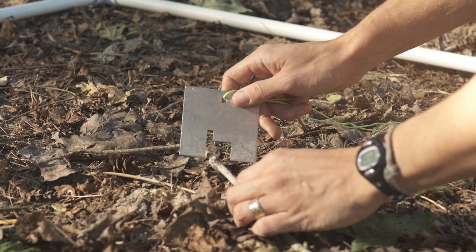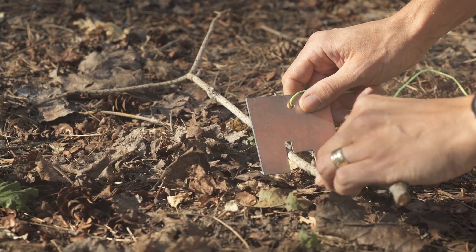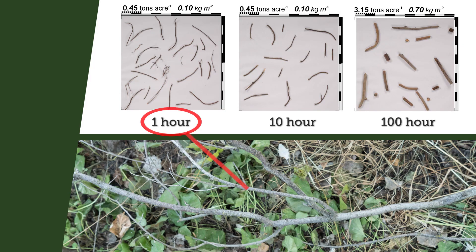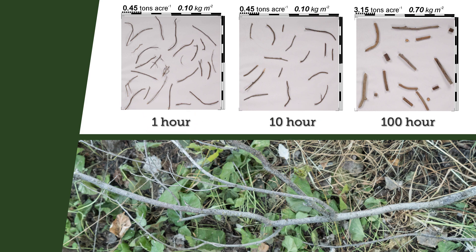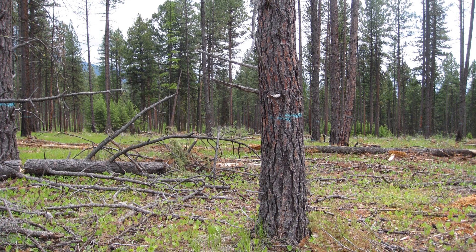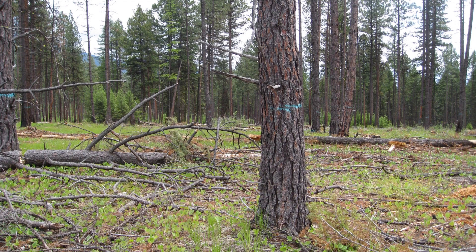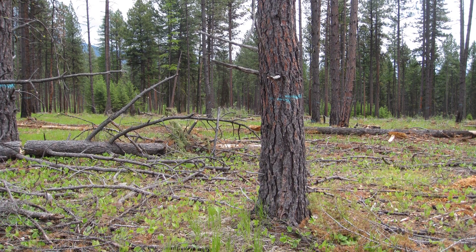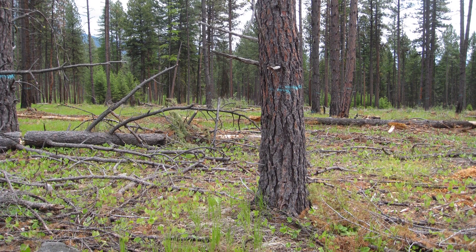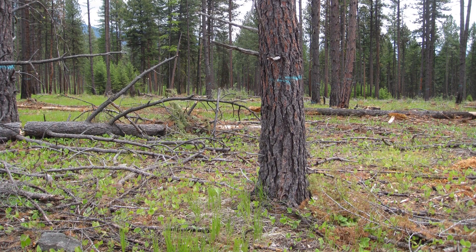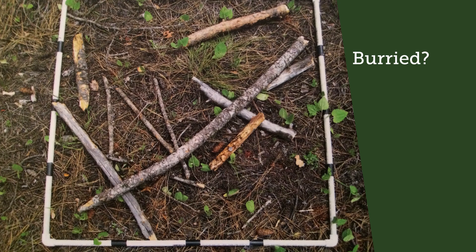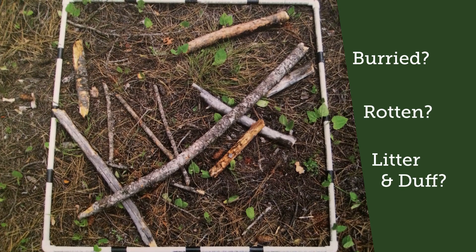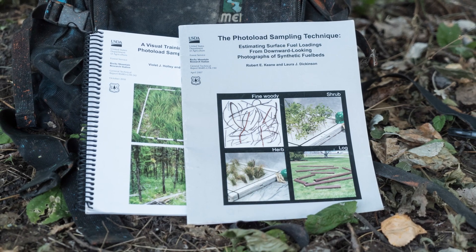If you have a piece of fuel that is part one-hour and part ten-hour fuel, simply treat it as two pieces, one counted in each category. It's important to realize there is a variety of loading variations depending on the exact diameter of the fuel particle, so pay special attention to the range of diameters in both the photo load sequence and your sampling unit. Some images may not have the range of diameters observed in the field, so your loading estimate may need to be adjusted. See the photo load manual for details on buried fuel particles, rotten logs, and litter and duff loading.